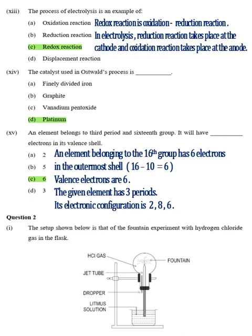Part 13, Answer C, Redox reaction. Redox reaction is oxidation reduction reaction. In electrolysis, reduction reaction takes place at the cathode and oxidation reaction takes place at the anode. Part 14, Answer D, Platinum.